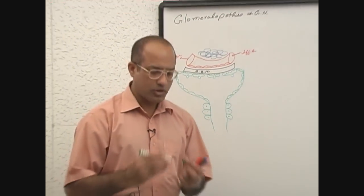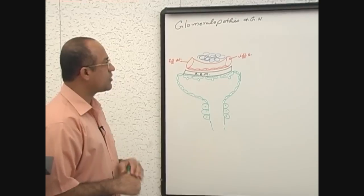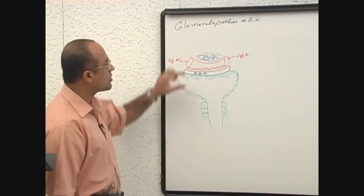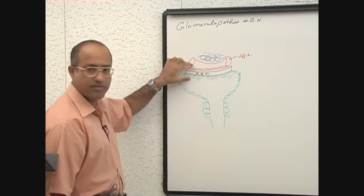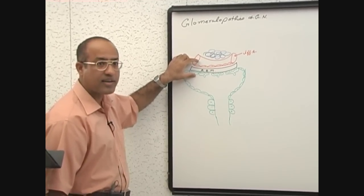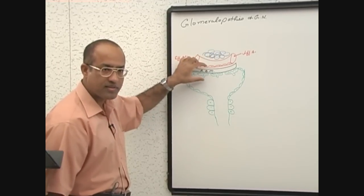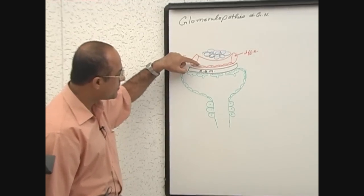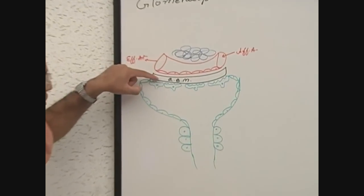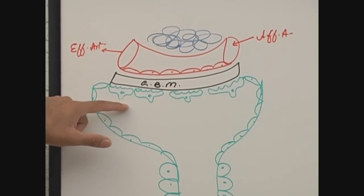Now, one thing which should be clear is that when we are talking about the glomerular diseases, we must be very clear about this filtration membrane because glomerular diseases alter the characteristics of these filtration membranes. Normally it has three components: endothelial cells, then there is glomerular basement membrane, and then there is epithelial cells.